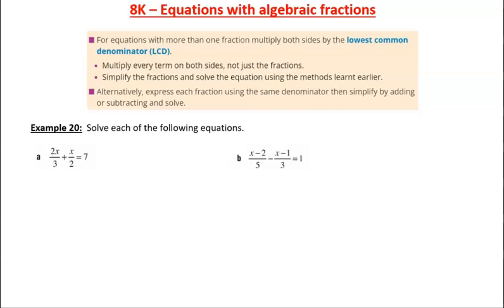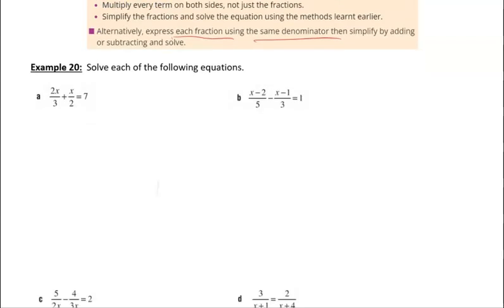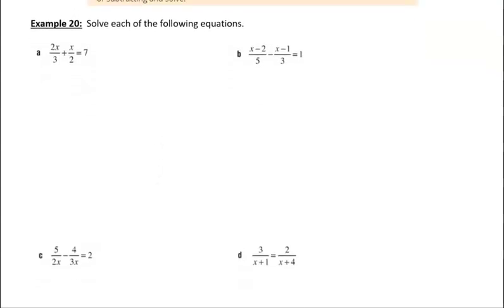So if we have more than one fraction, multiply both sides by the lowest common denominator. We can do that. Ultimately, we can express each fraction using the same denominator, then simplify by adding and subtracting and solving. So for the first one here, I'm going to use the idea of equivalent fractions.